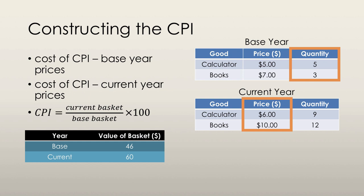So we take $6 per calculator and multiply it by five calculators bought, and $10 per book in the current year multiplied by three books bought — despite the fact that in the current year we have nine calculators sold and 12 books sold, we ignore that. The value of the basket in base year quantities at current year prices is $60.